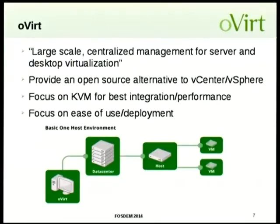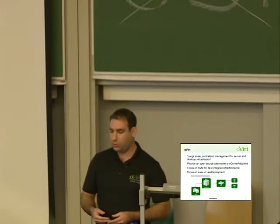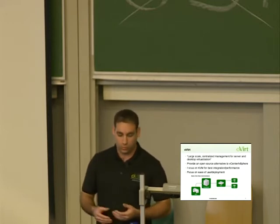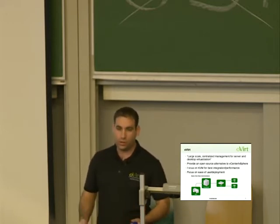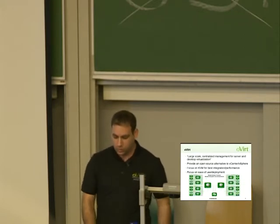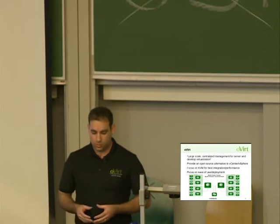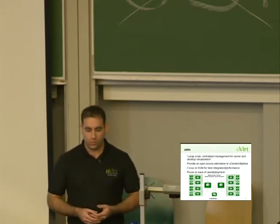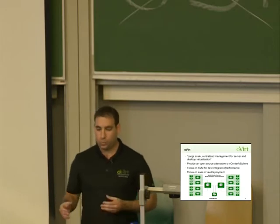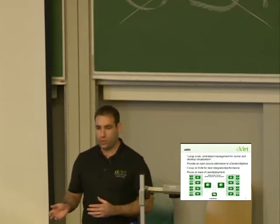You can use oVirt for small environments like a single data center with a single host running a couple of VMs — basically good for demos and testing, though you don't have important features like live migration there. You can grow with oVirt to a multi-data-center and multi-cluster environment. oVirt manages multiple data centers; each data center has multiple clusters, and each cluster has multiple hosts. A cluster is a migration domain — within a cluster you can live migrate VMs from one host to another.